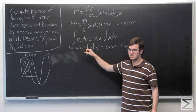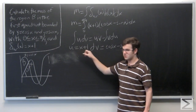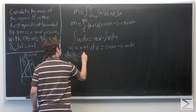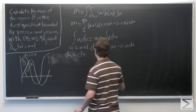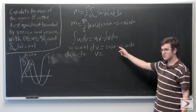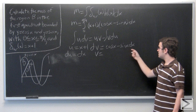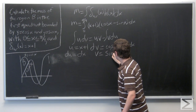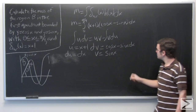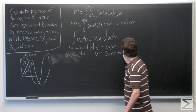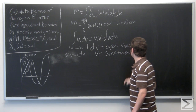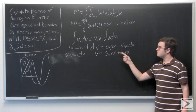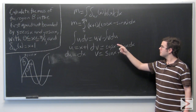Finding du, we take the derivative of both sides, giving us du equal to dx. To find v, we integrate both sides. Integrating cosine of x minus sine of x dx, we get sine of x plus cosine of x.